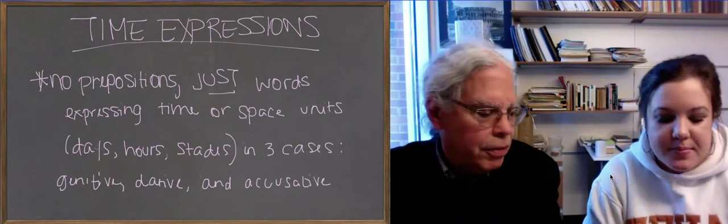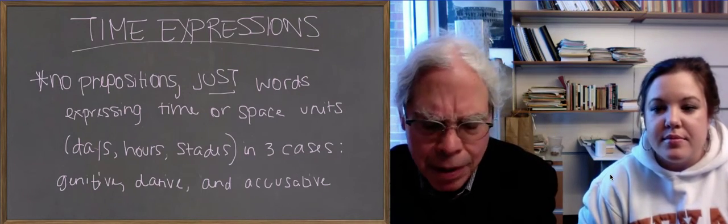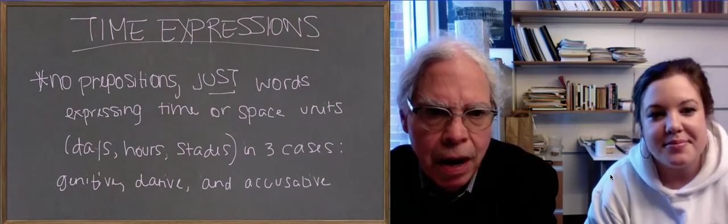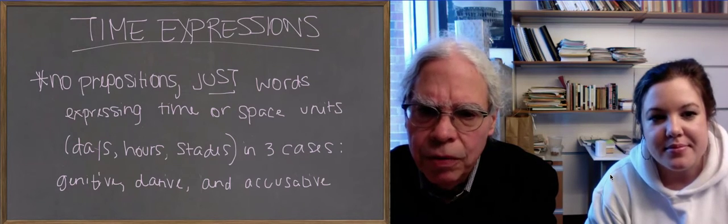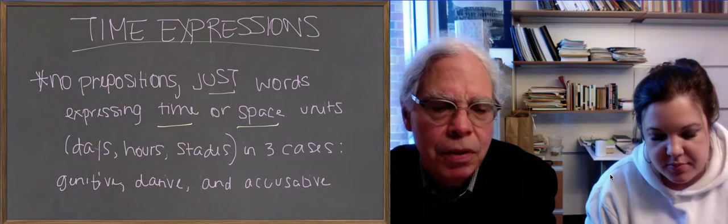So this is unit six in Hanson and Quinn. The last piece of grammar in it is about how you express time, and the same thing that works for time works for space as well, time or space in ancient Greek.